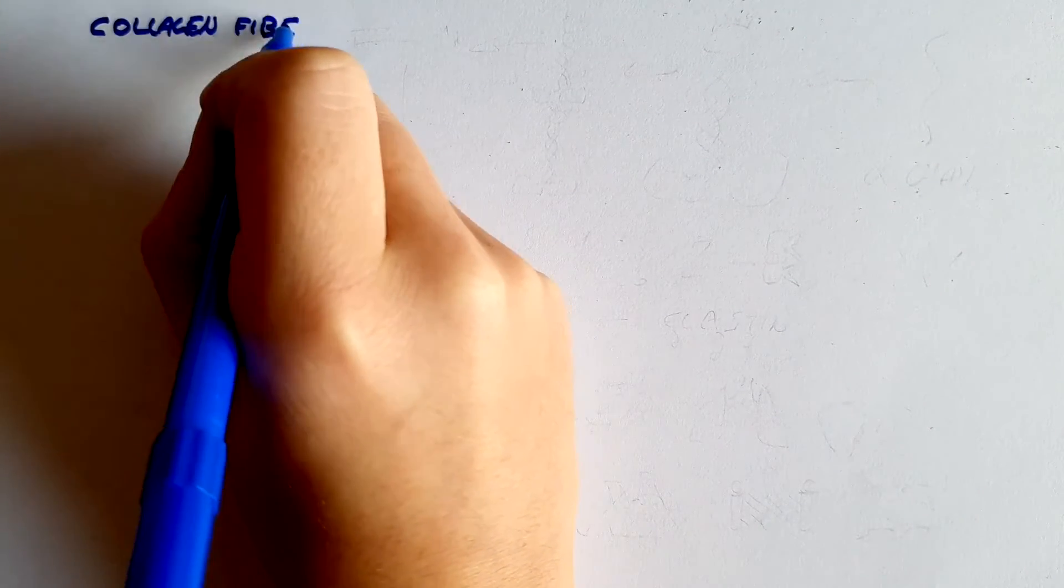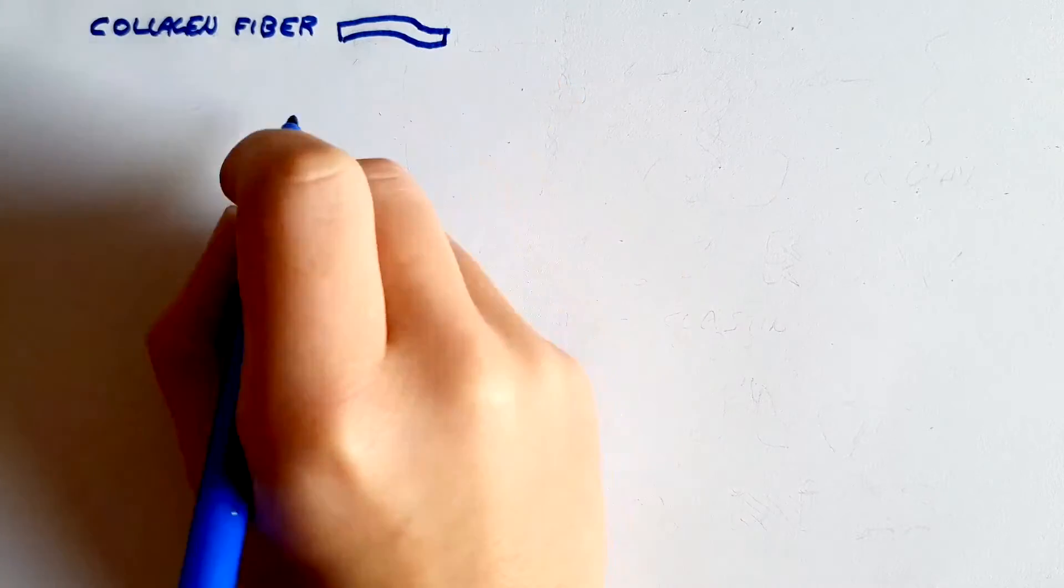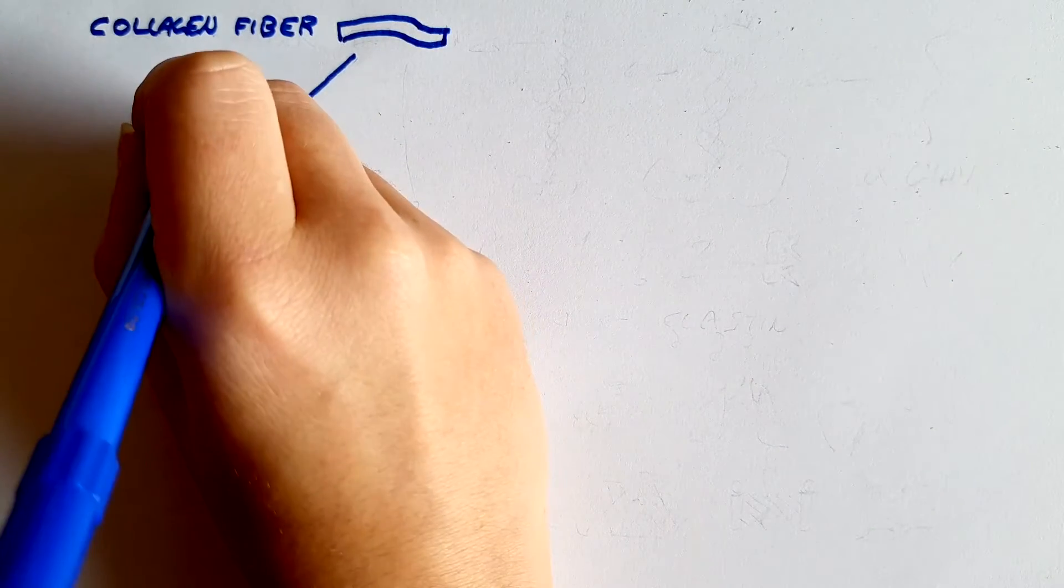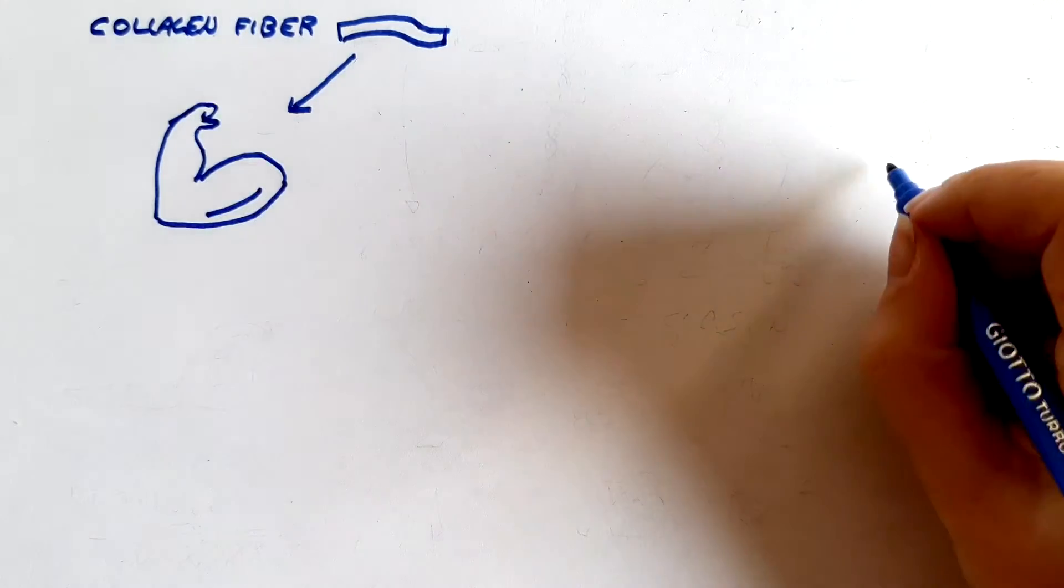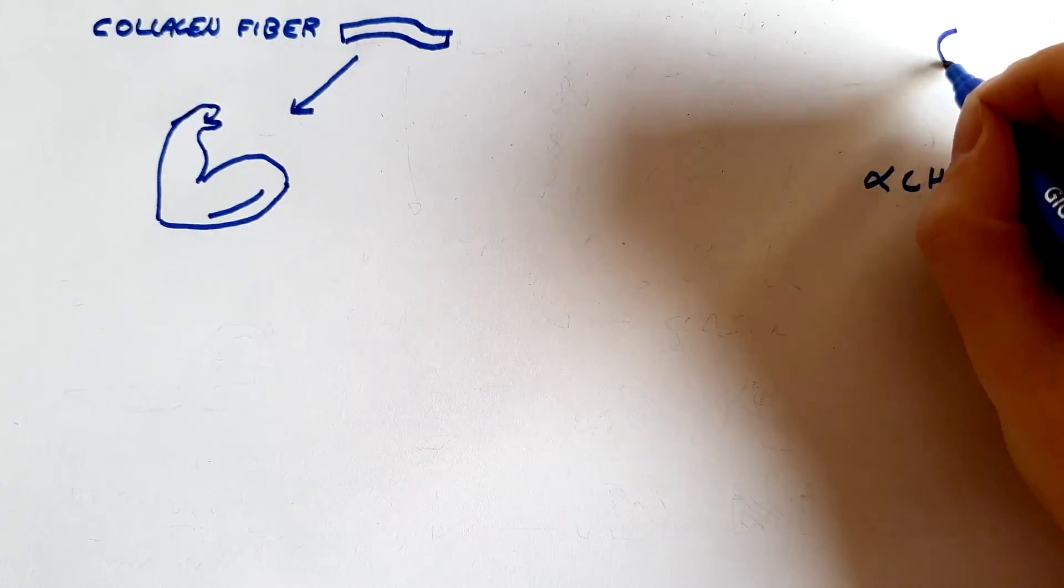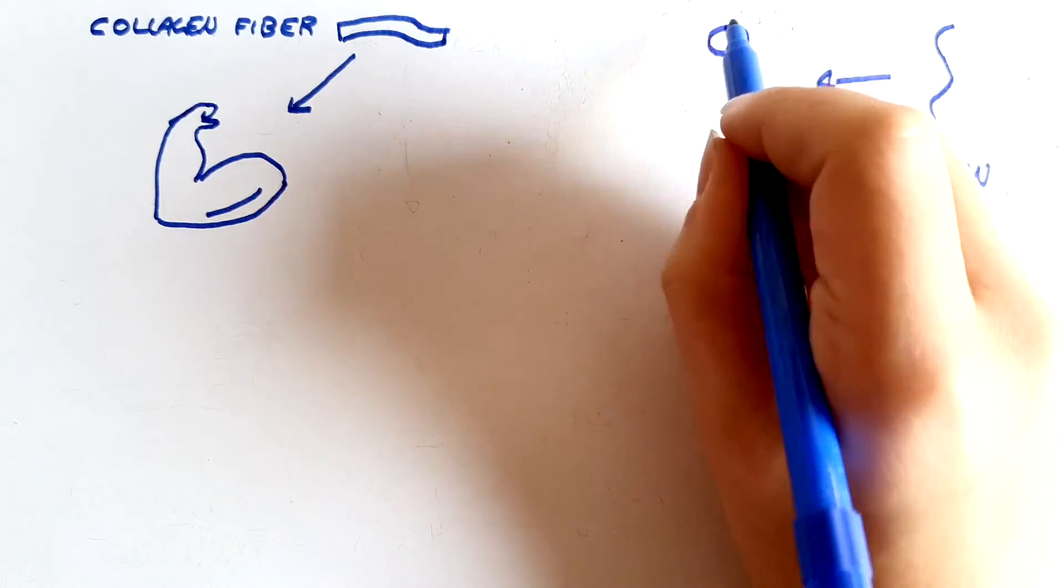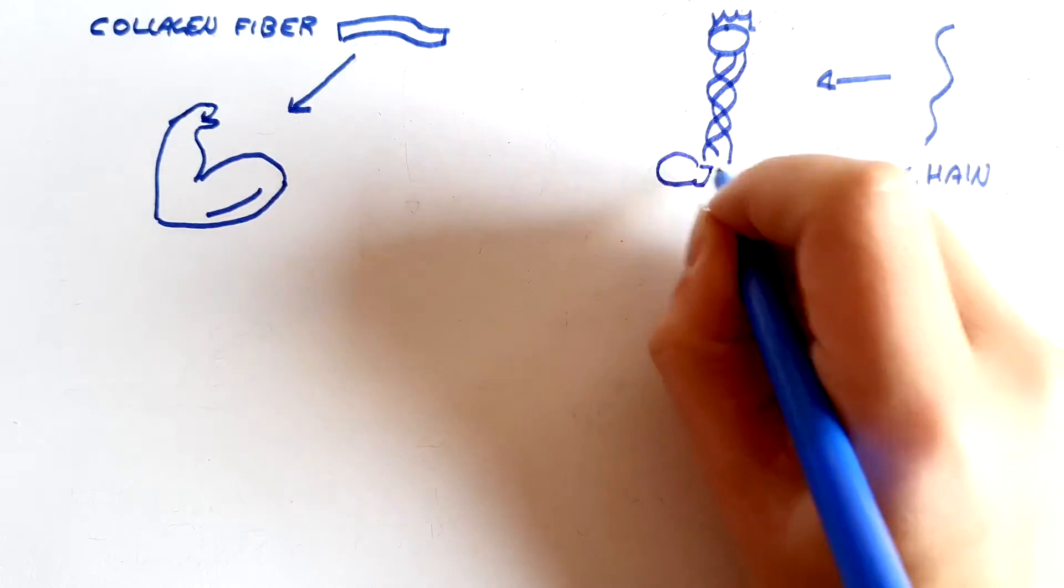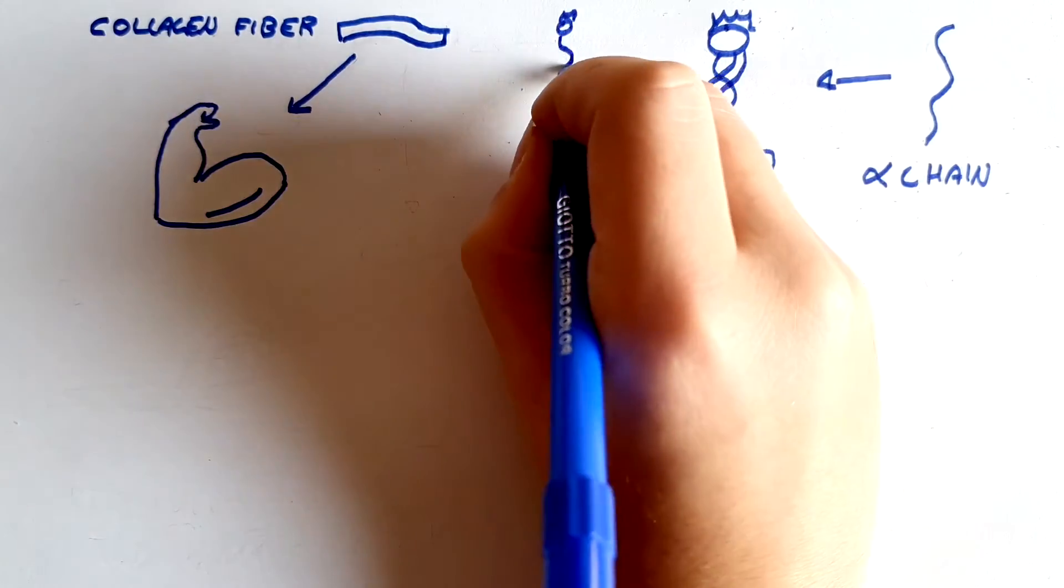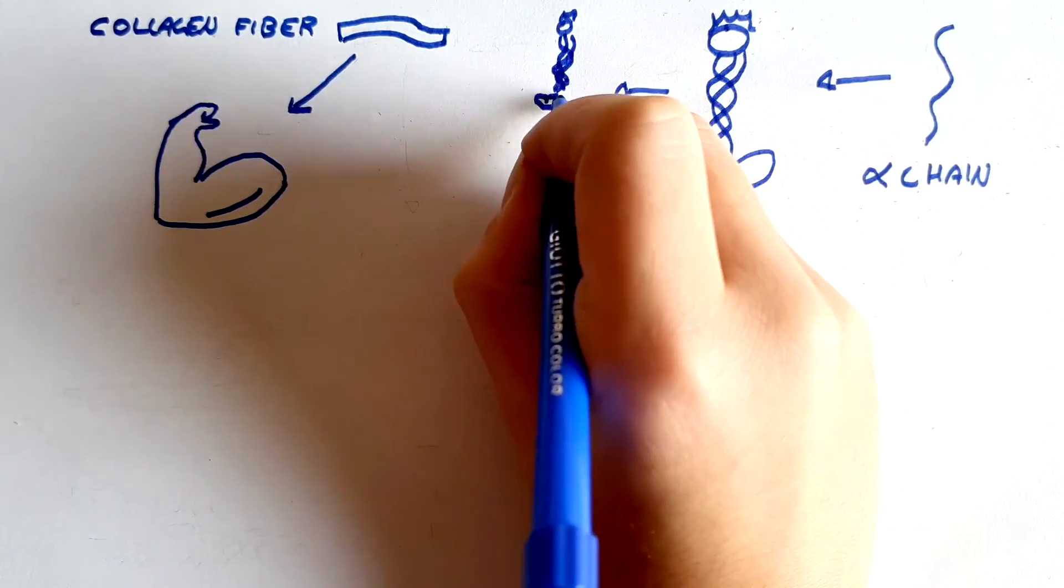Let's now talk more in detail about the fibrillary components. Firstly, collagen fibers are abundantly present, flexible, and resistant to tensile stress. These fibers have a wavy and compound structure: three alpha chains wrapped around one another in a helical configuration. This combination in triplets gives rise to tropocollagen.